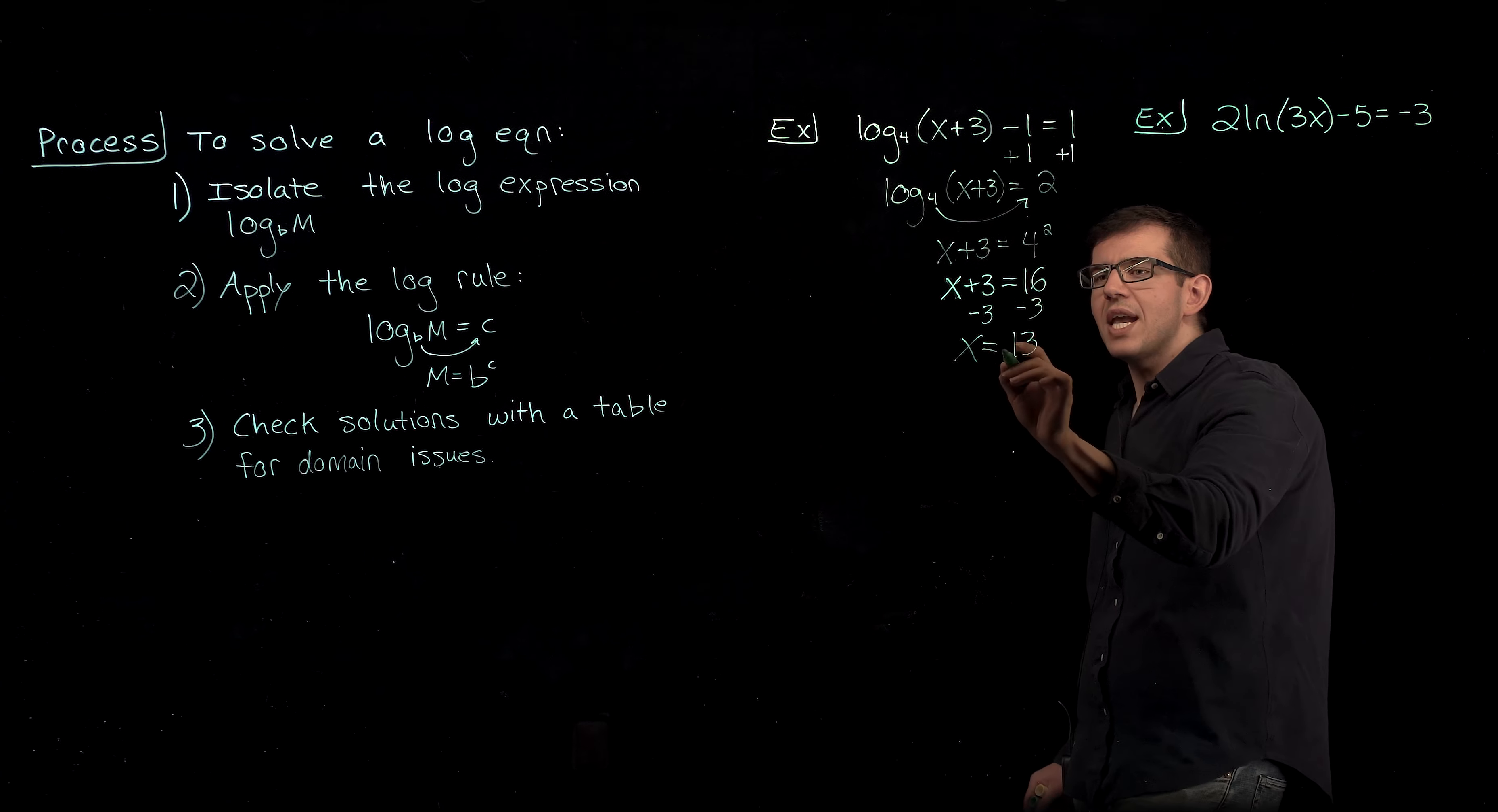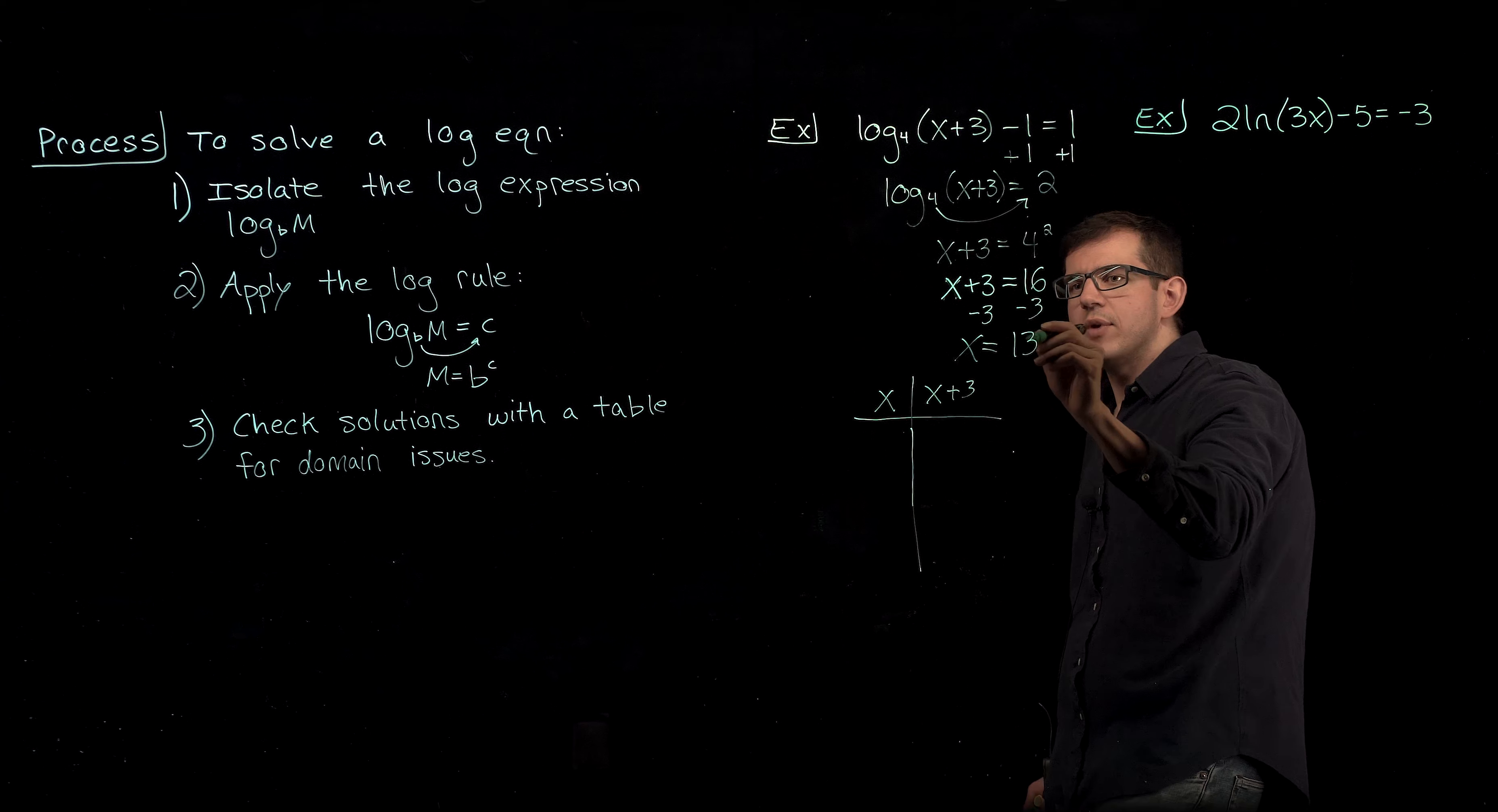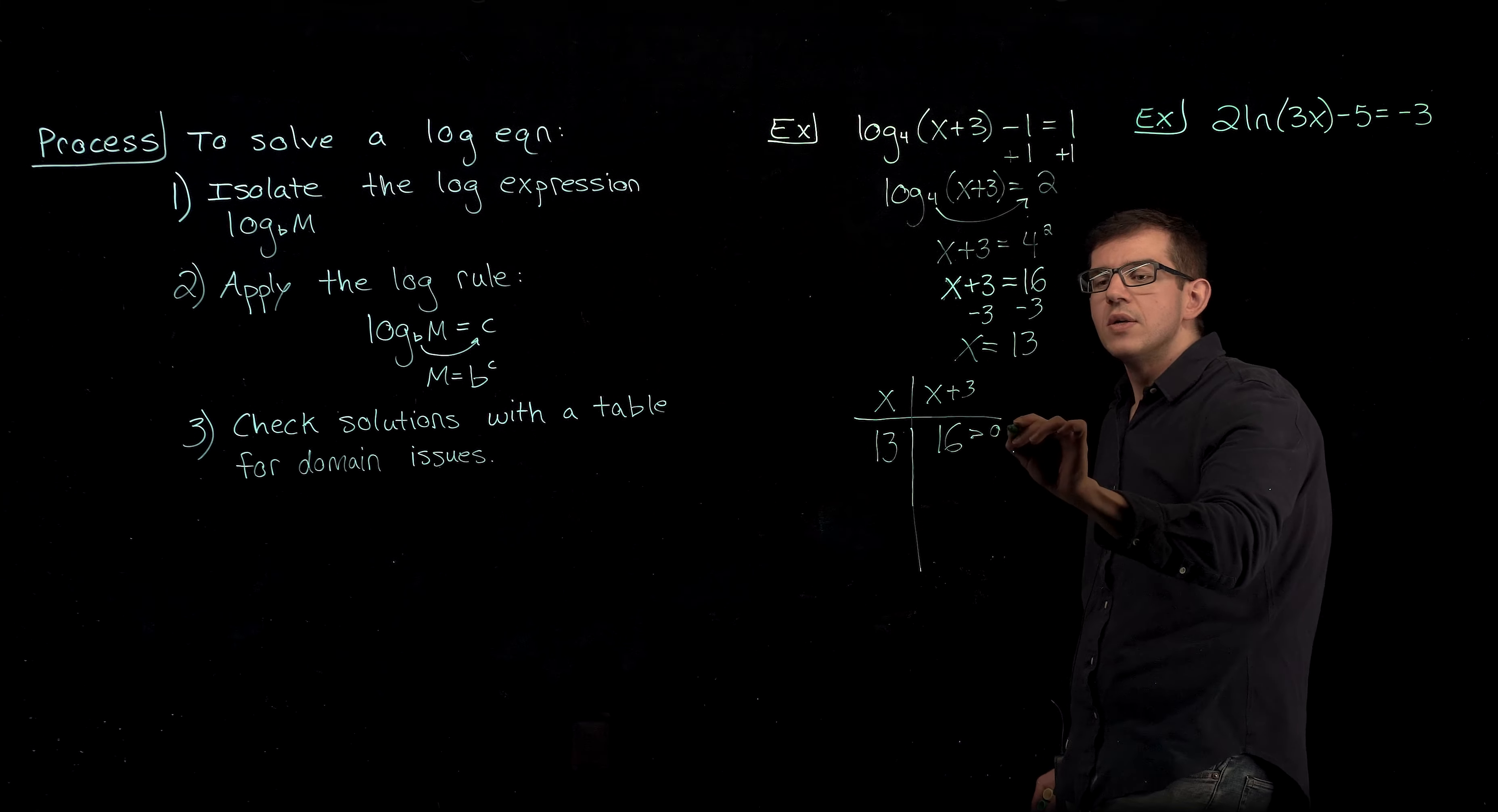So we're going to take this x equals 13 value and creating a table variable with our value of x and whatever was inside of our log, in this case x plus 3, we're going to check. If we take 13 and plug it into this expression that was inside of our log, x plus 3, we'll get 13 plus 3 is 16. 16 is a value that is greater than 0, so it checks out, meaning x equals 13 is our solution.